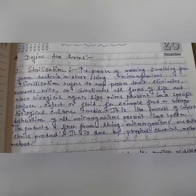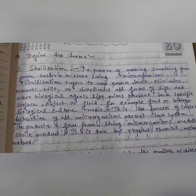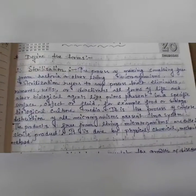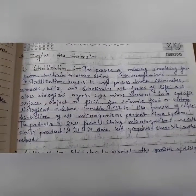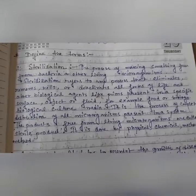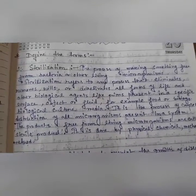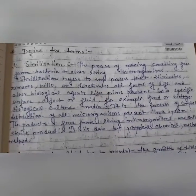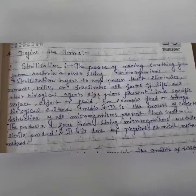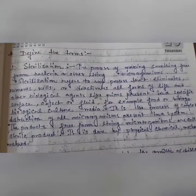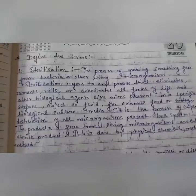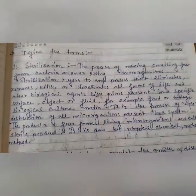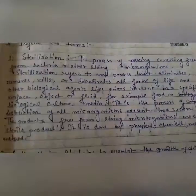The sterilization process is one type of process in which all microorganisms are destroyed — that means the spores of microorganisms are also destroyed by this process. There are different methods available, such as physical, chemical and mechanical methods. That is called the sterilization process. It means the product is 100 percent free from microorganisms.